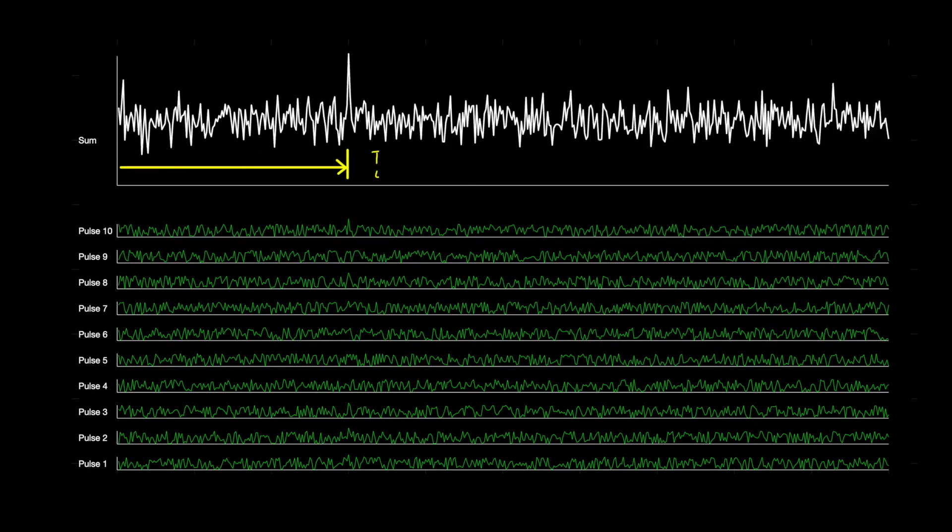And then at this point, we can find the time of this peak and from it, determine the range. Now, something to note about this is that we're making the assumption that the range to the object doesn't change from pulse to pulse, since we're expecting the peak to be in the same location each time. And that assumption is pretty good. Because remember, the time between pulses in this case is 1 millisecond.